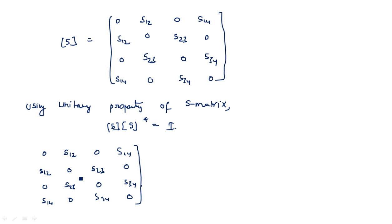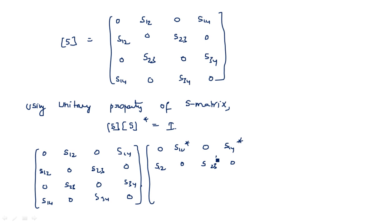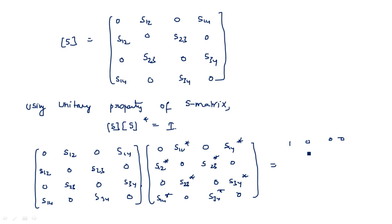Multiplying S by S-star, the S-star matrix has elements: 0, S12-star, 0, S14-star; S12, 0, S23, 0; 0, S23-star, 0, S34; S14-star, 0, S34-star, 0. This product equals the 4 by 4 identity matrix with 1s on the diagonal and 0s elsewhere.